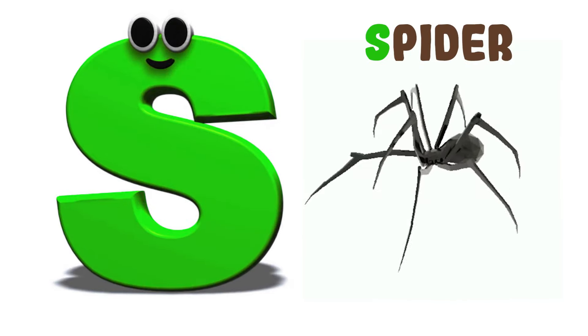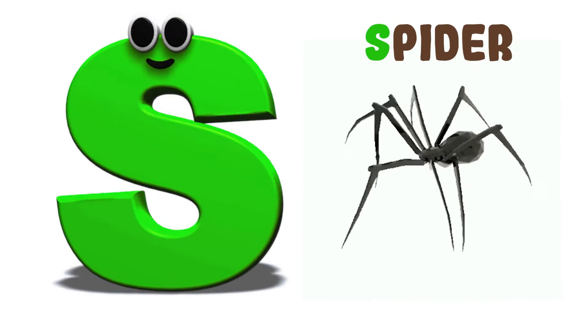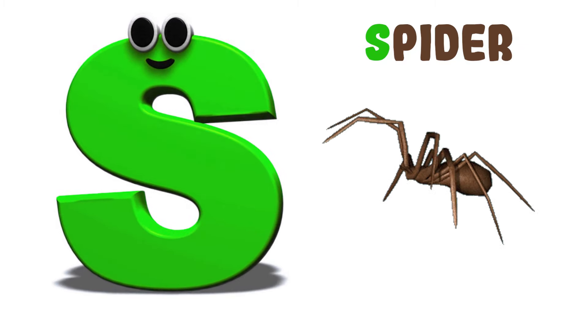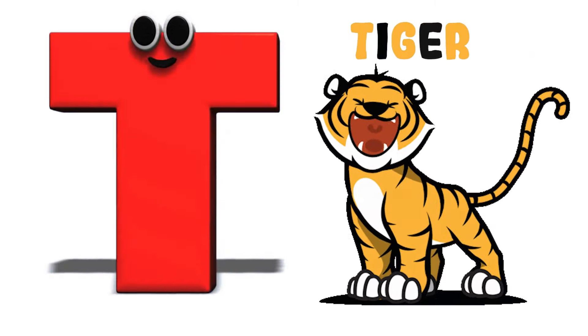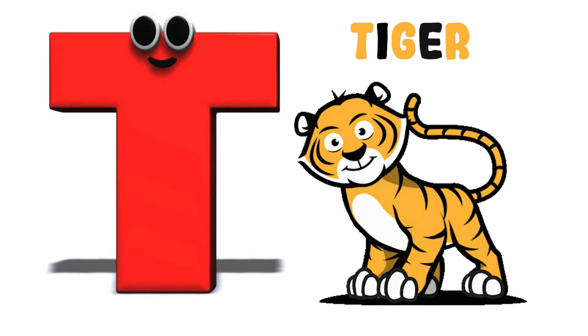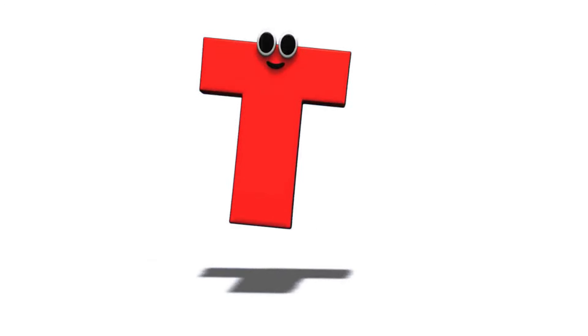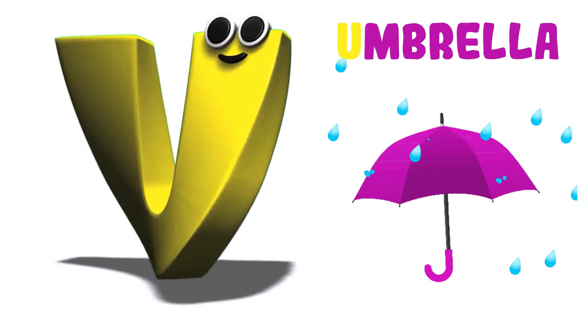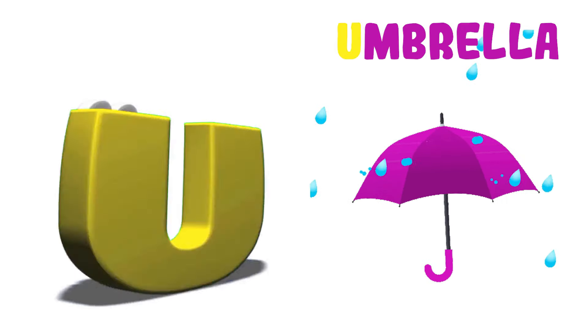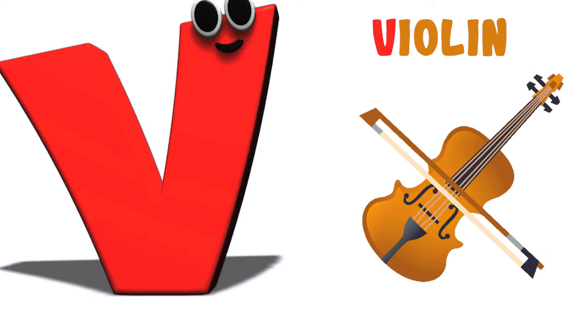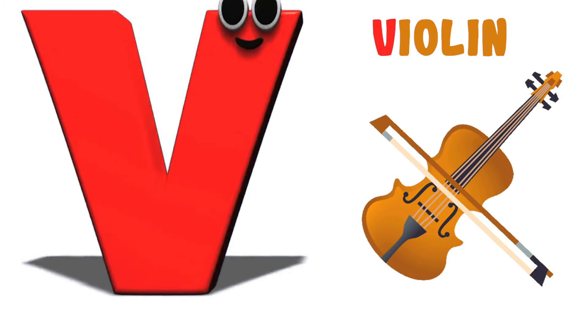S is for Spider. S-S-Spider, S-S-Spider. S-Spider. T is for Tiger. T-T-Tiger, T-T-Tiger, T-T-Tiger, T-Tiger. U is for Umbrella. A-A-Umbrella, A-A-Umbrella. U, umbrella. V is for Violin. V-V-Violin, V-V-Violin.